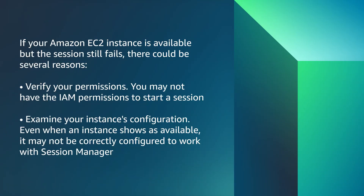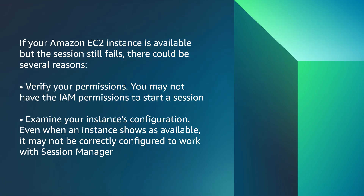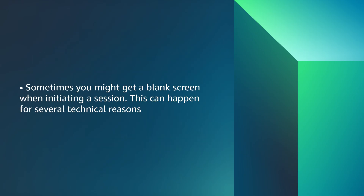If your Amazon EC2 instance is available but the session still fails, there could be several reasons. One, verify your permissions — you may not have the IAM permissions to start a session. Two, examine your instance's configuration; even when an instance shows as available, it may not be correctly configured. Three, Windows plugin path — when connecting from Windows machines using the AWS CLI, the Session Manager plugin may not be added to the command line path. Four, target not connected errors typically stem from incomplete Session Manager configurations or attempts to connect across accounts or regions. Five, sometimes you may get a blank screen when initiating a session. For detailed guidance, please refer to the troubleshooting guide linked in the video's description.